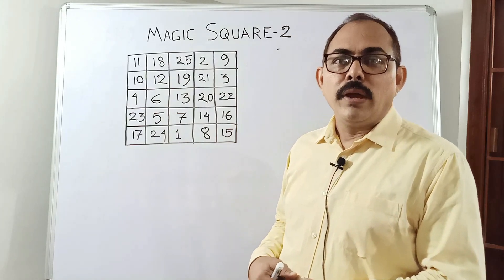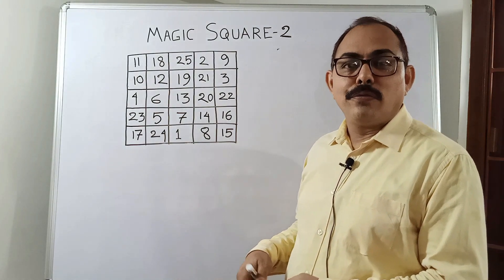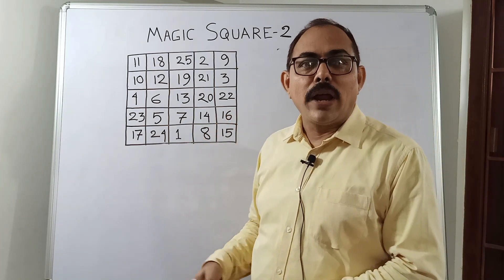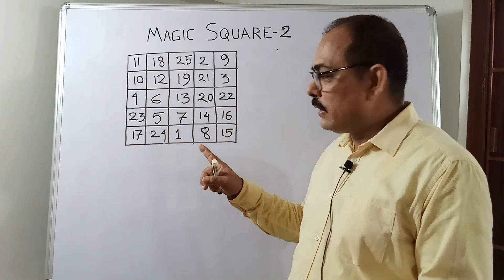In our last episode, we asked you to make a magic square of 5 by 5 order. Here is the solution. I hope you have tried yourself. Just a recap.